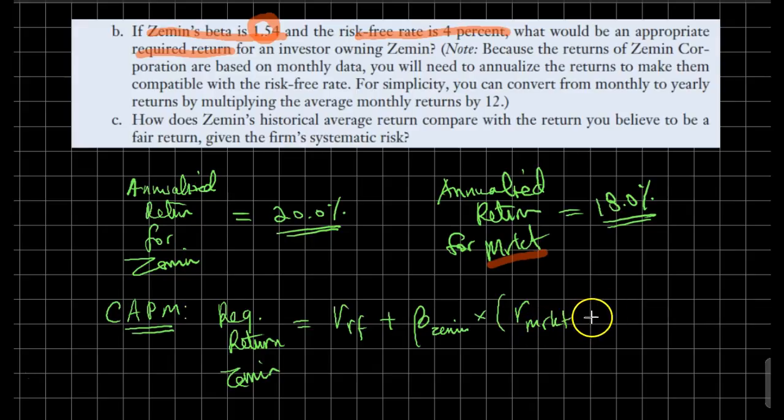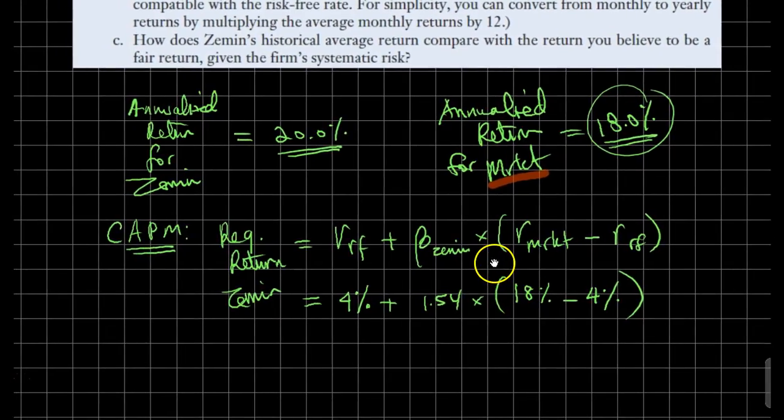Let's plug in the numbers. The risk-free return is 4%. The beta for our company is 1.54 times the market return, which was 18%, minus the risk-free return of 4%. Now we just need to do the algebra. We get 4% plus 1.54 times 14%, which is 21.6%. Therefore, adding up these numbers, we get 25.6%.